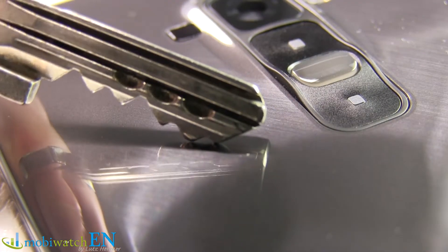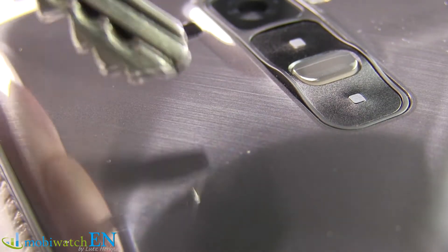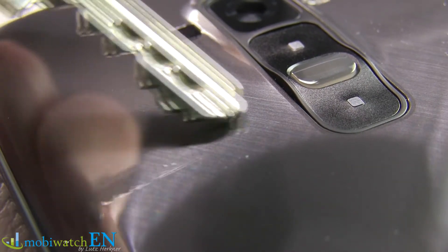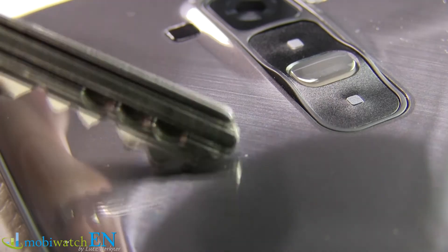That's why we now take a key and move it along the back of the G Flex with little pressure. Again we can't see any damage.